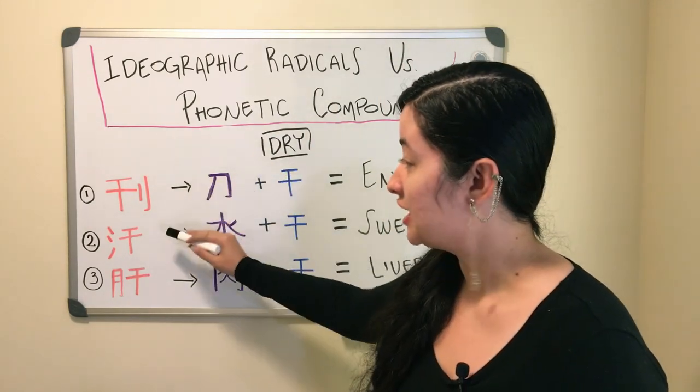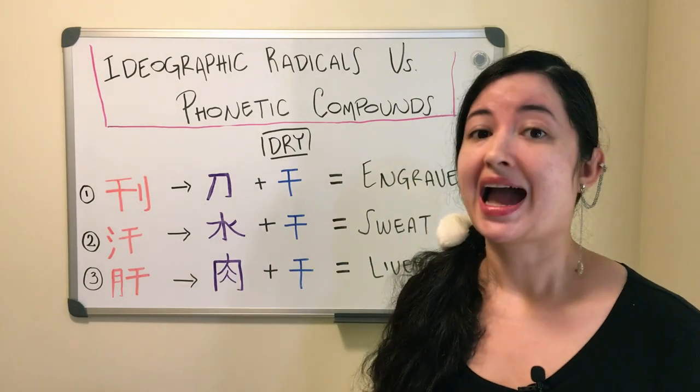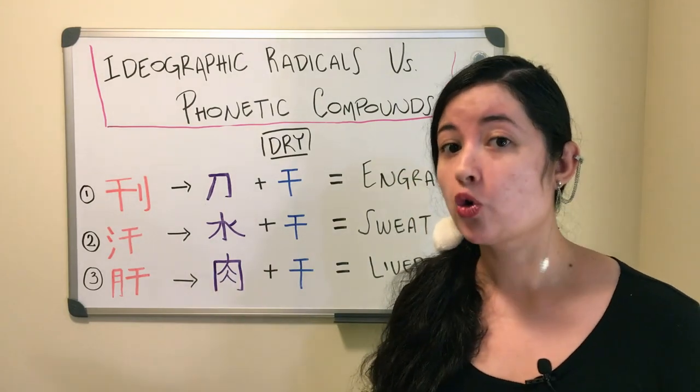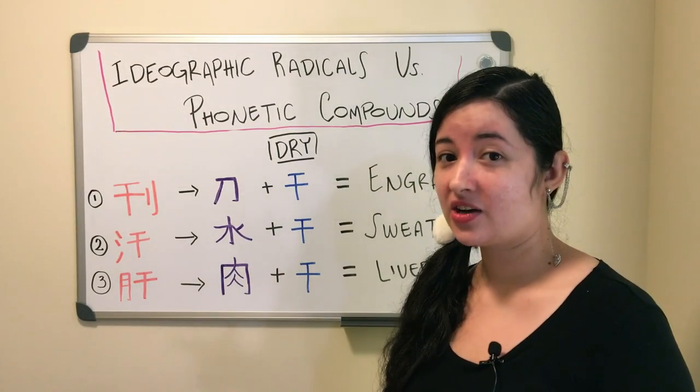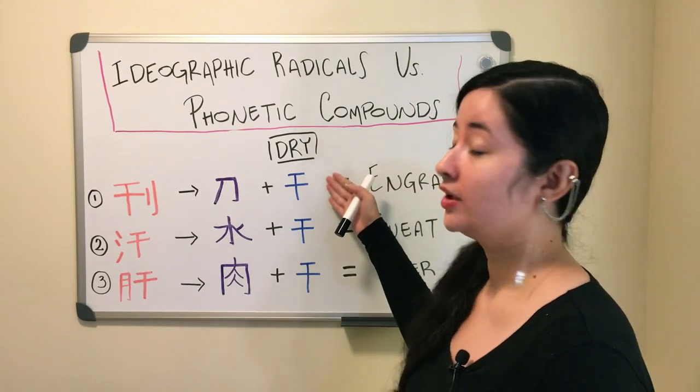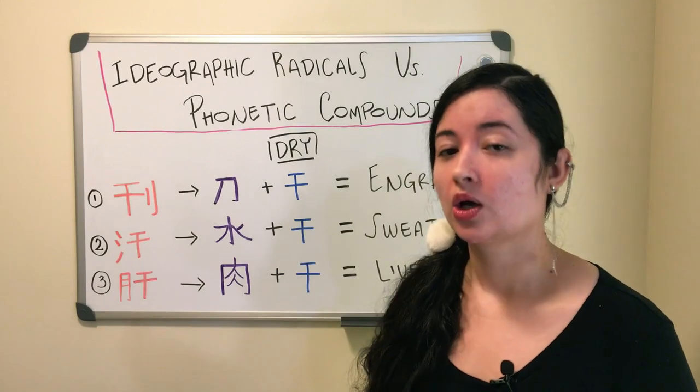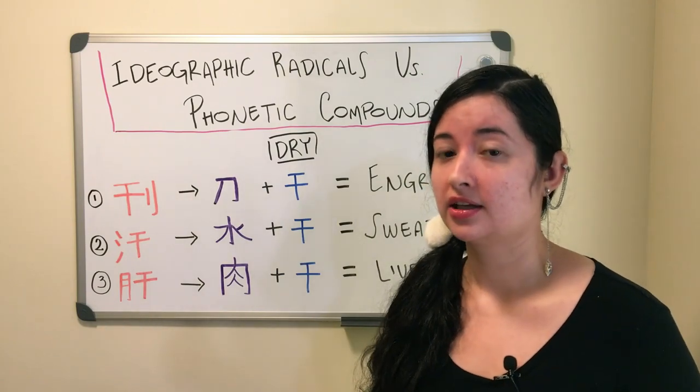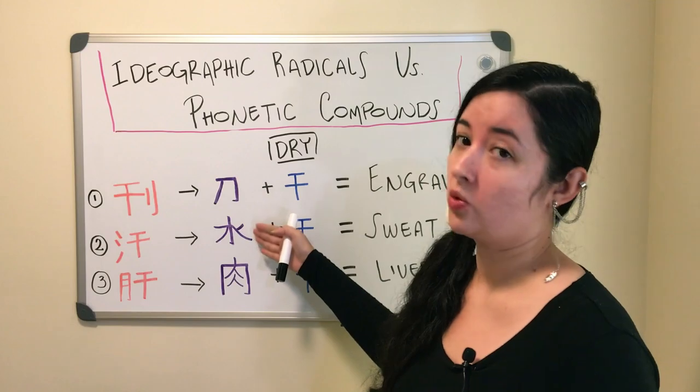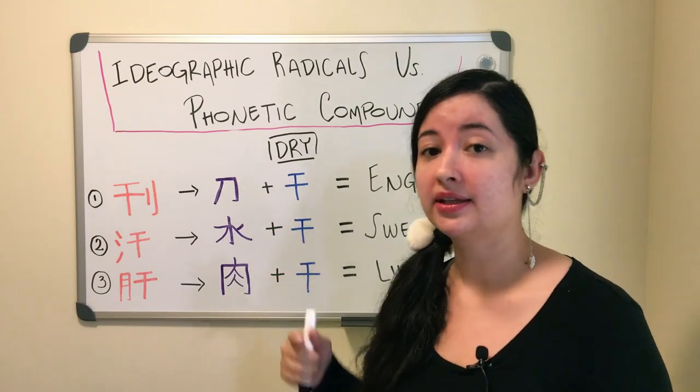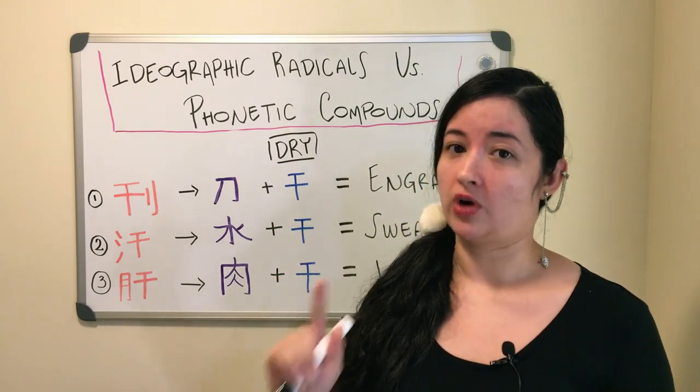These three, each one of them is read as KAN just for the ON reading. That is how the DRY compound plays the role of the phonetic compound, while on the other hand, the radical for sword, water, and meat played the role of the ideographic radical.